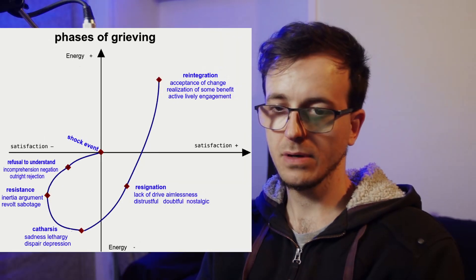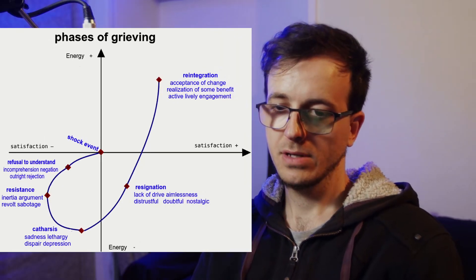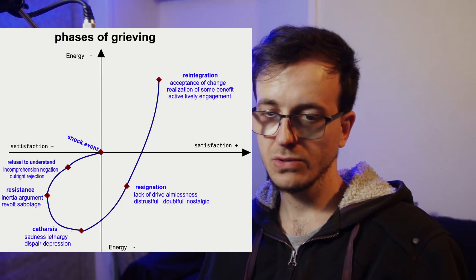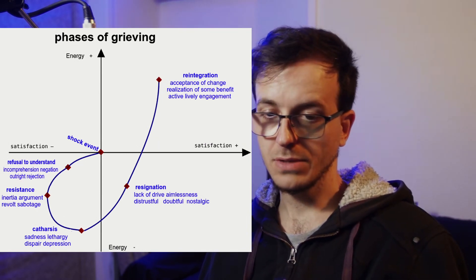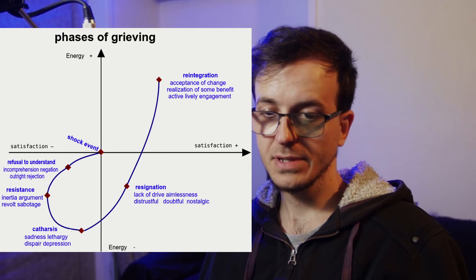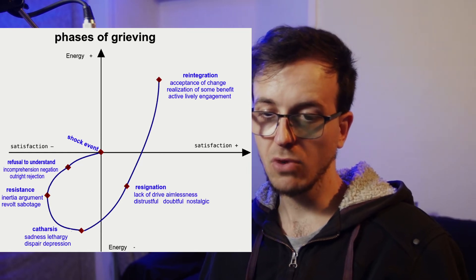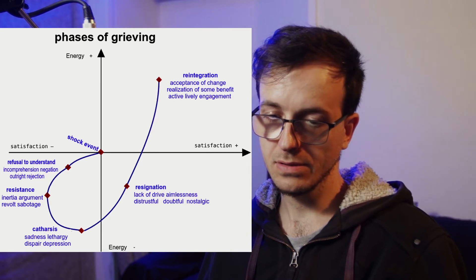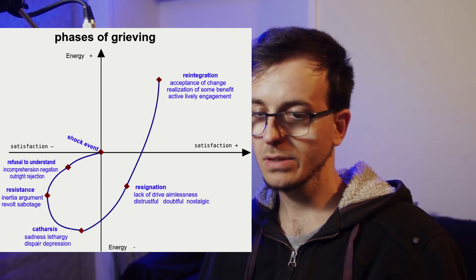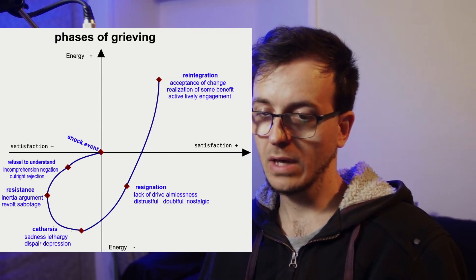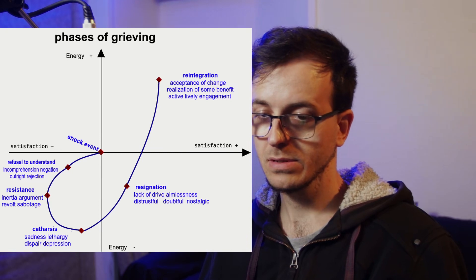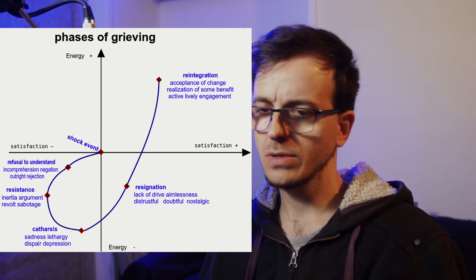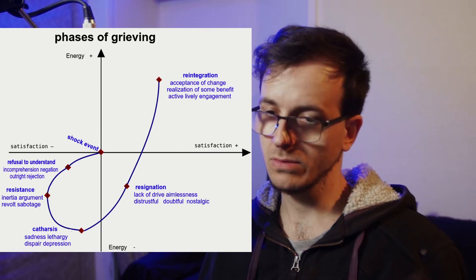The speaker references the Kübler-Ross model, listing stages including shock, satisfaction, energy, denial, rejection, resistance, anger, sadness, lethargy, despair, depression, resignation, aimlessness, and eventually acceptance of change, reintegration, and return to normal.